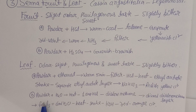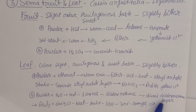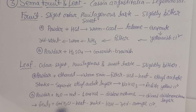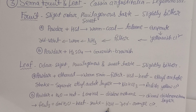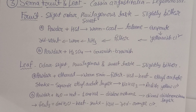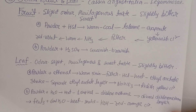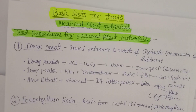Second test for Senna leaf: add water to the powder and heat it. Add one drop of HCl, then add dichloromethane — two layers will form. Discard the dichloromethane layer. To the remaining layer, add ferric chloride (FeCl₃) and 6 ml of water, heat and shake properly, then add potassium hydroxide — a red-orange color will be observed, indicating the presence of Senna leaf.